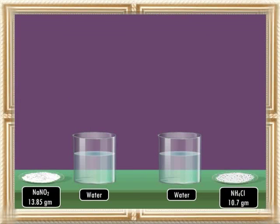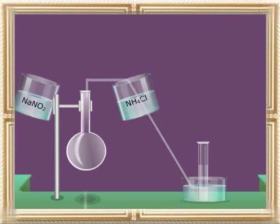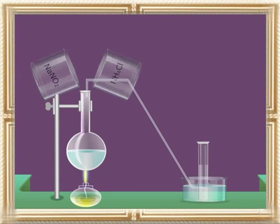In the laboratory, nitrogen is prepared by heating a mixture of ammonium chloride, sodium nitrite, and a small quantity of water.